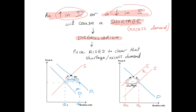This excess demand will exert an upward pressure on the price, so price gradually rises to clear that shortage or excess demand. As you can see here, the increase in demand — the shift of the demand curve from D to D1 to the right — has created a shortage. Price begins to rise, which leads to an increase in quantity supplied and a decrease in quantity demanded until a new equilibrium is reached.